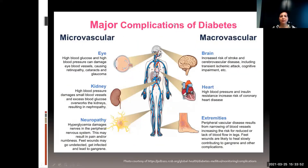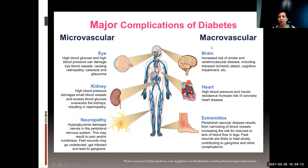Microvascular complications — affecting the eyes, kidneys, and nerves — can result in making your life miserable. If left unchecked, kidney damage can result in you being on dialysis. Macrovascular complications are what unfortunately kill you — they put you at increased risk of stroke, heart attack, heart disease, and peripheral vascular disease, all of which also increase your risk of dying.